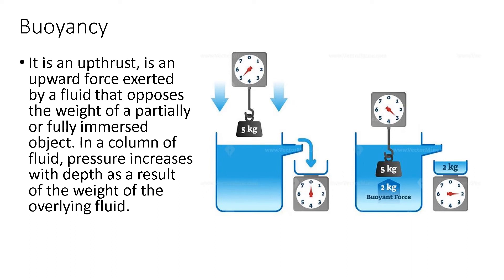Meanwhile, buoyancy is an upthrust. It is an upward force exerted by a fluid that opposes the weight of a partially or fully immersed object. In a column of fluid, pressure increases with depth as a result of the weight of the overlying fluid. The buoyant force is the upward force that we see in the illustration, the 2 kilograms that lifts the object from the fluid, making the weight of the object lighter compared to before.